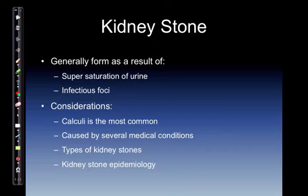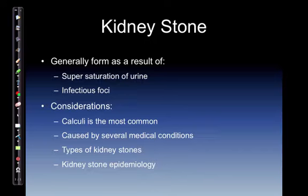Types of kidney stones. Struvite is one of them — chemicals such as magnesium, ammonium, and phosphate form around a bacteria acting as a focus, forming an infective infection stone. Staghorn stones are large struvite stones. Cystine stones result from an autosomal recessive disorder which leads to an inborn error of metabolism. Xanthine stone: hereditary xanthine oxidase deficiency causes the nitrogen compound xanthine to form a stone.